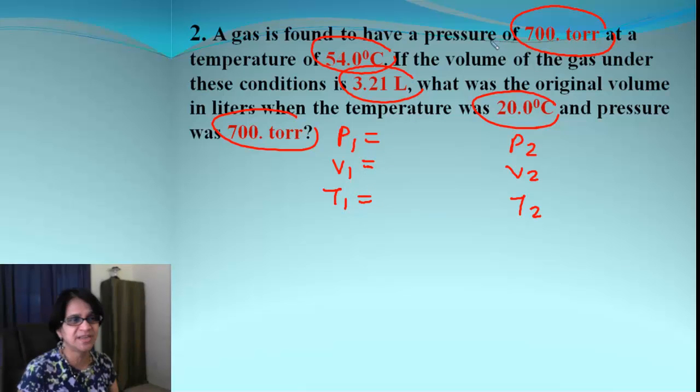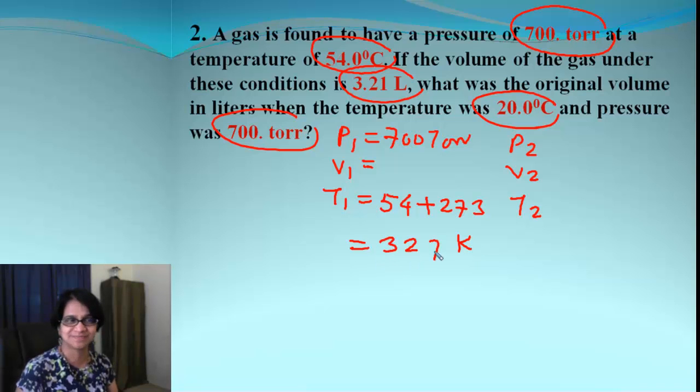So, we have here the first pressure beginning with 700 torr. At a temperature of 54 degrees, so you need to add 273 to make it into Kelvin which comes out to be 327 K. And then, the volume of the gas under the conditions is 3.21. So, we got V1 3.21 liters.